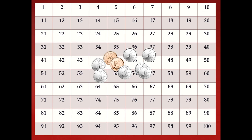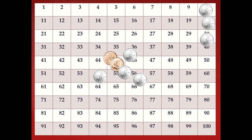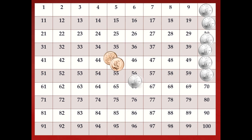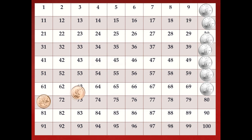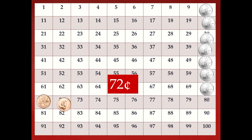We're going to count again. We always start with our largest coin. Our dime is worth the most, so that's what we're going to start with: ten, twenty, thirty, forty, fifty, sixty, seventy, seventy-one, seventy-two. This is seventy-two cents. Well done!